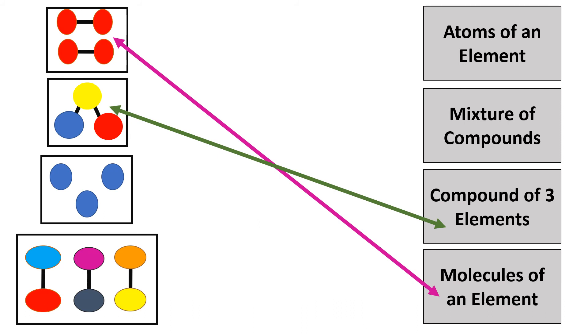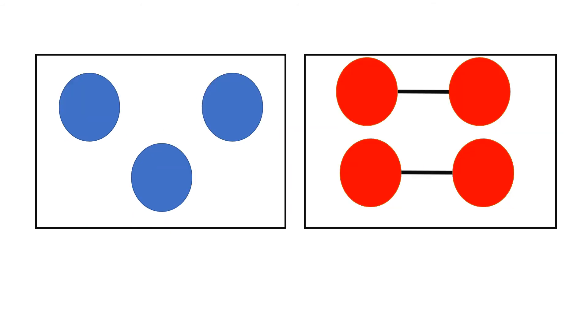What about the third one? Yes! It is atoms of an element. And lastly, the fourth box is called mixture of compounds.